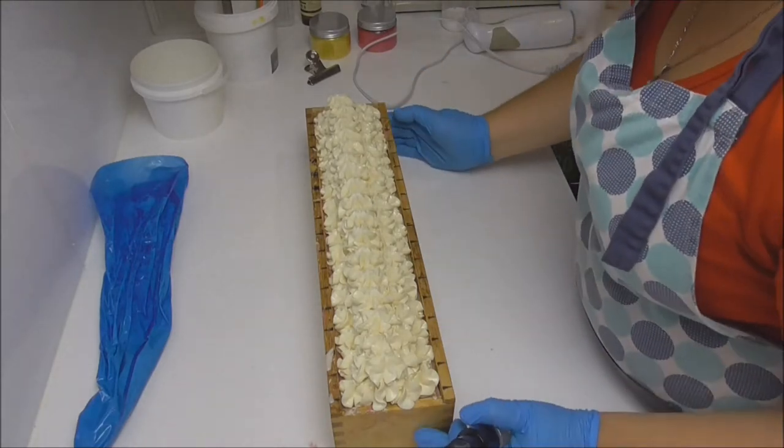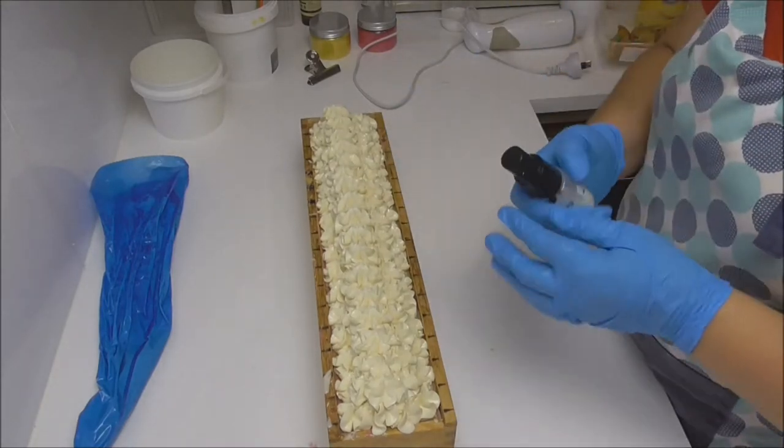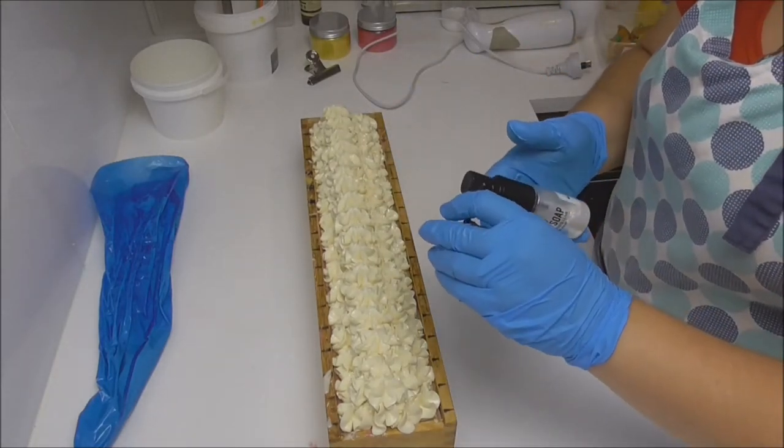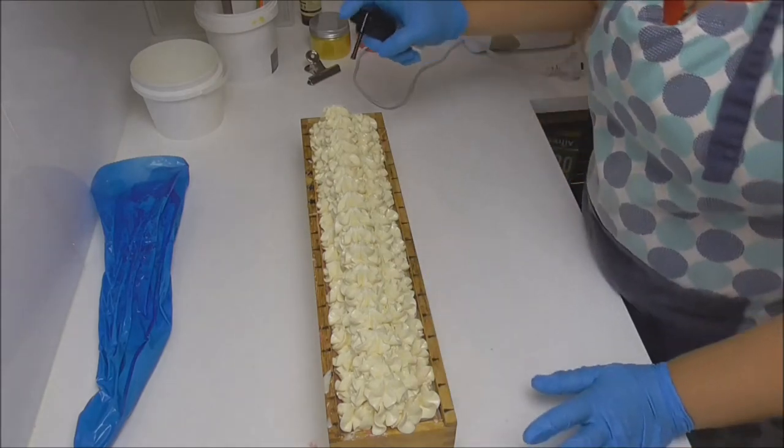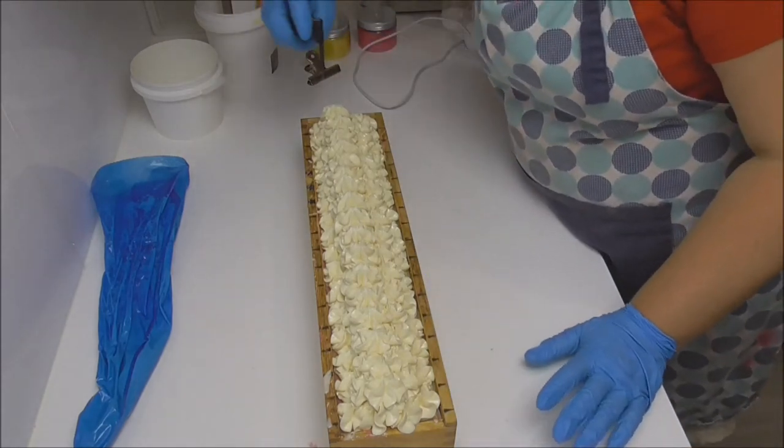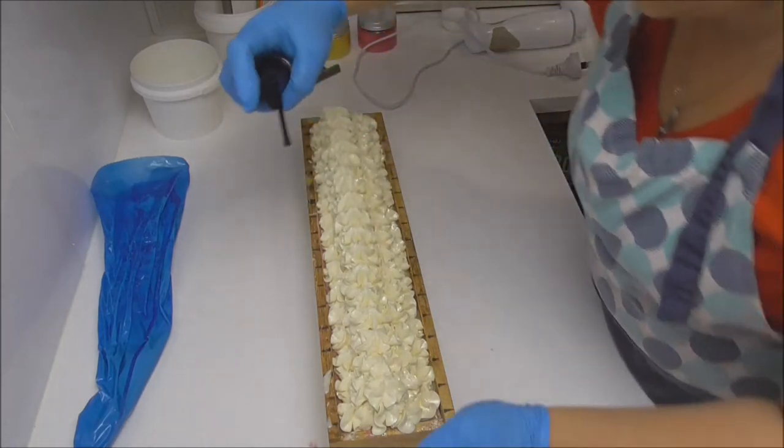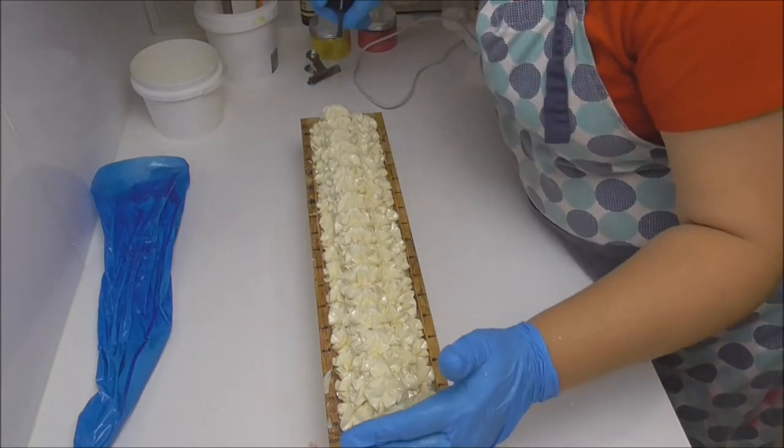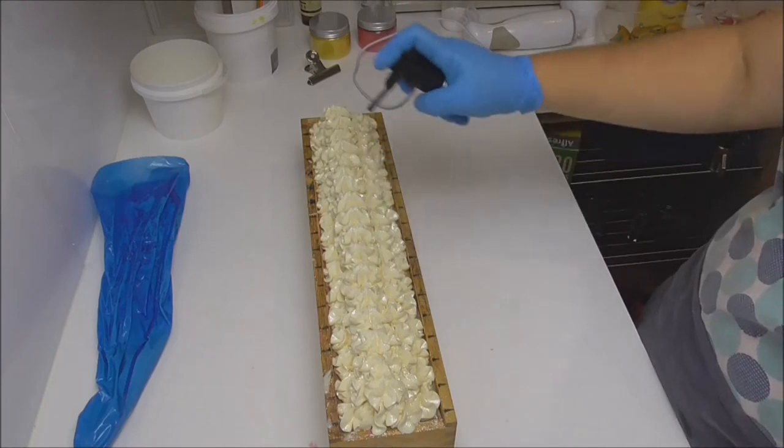I don't actually want any glitter on my embeds, so before I pop those on, I'm going to give this a quick spritz with some Blizzard Mica from My Mica Obsession, which I've got in one of the Nurture Soaps glitter spray pumps, because I do still want that little bit of glitter on the top.